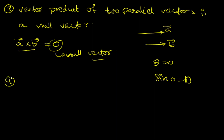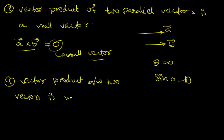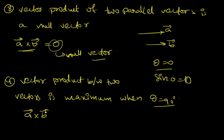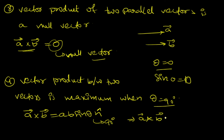The fourth property: the vector product between two vectors is maximum when θ = 90° and minimum when θ = 0°. We know that A-bar cross B-bar = AB sinθ n-cap. If we substitute θ = 90°, then A-bar cross B-bar = AB n-cap, since sin 90° = 1.